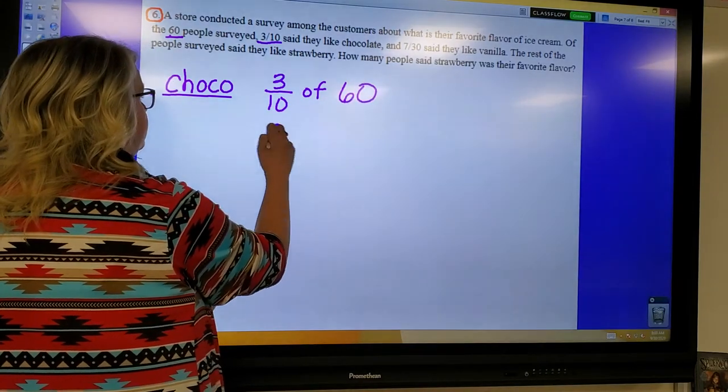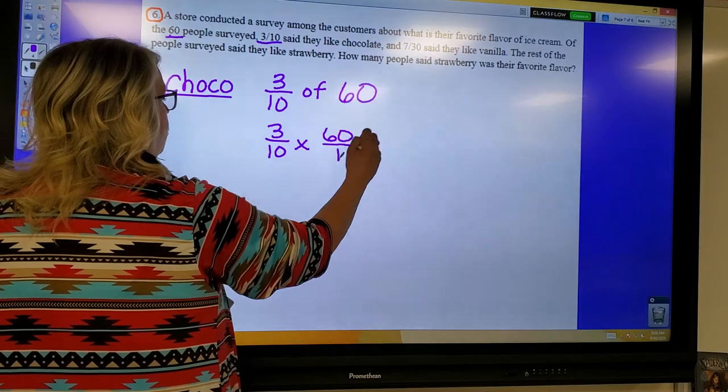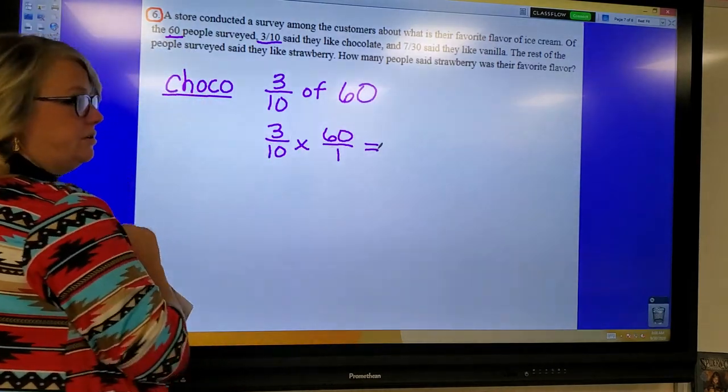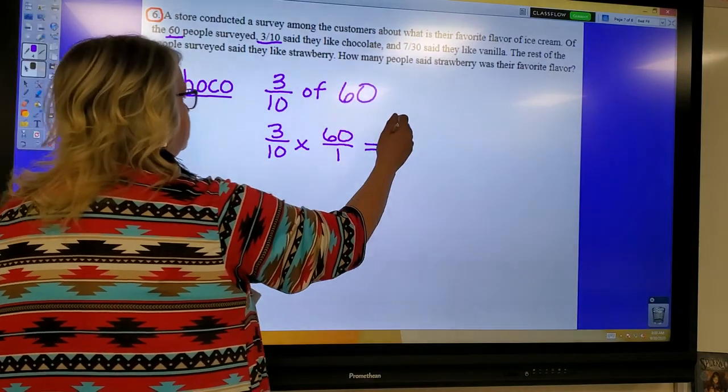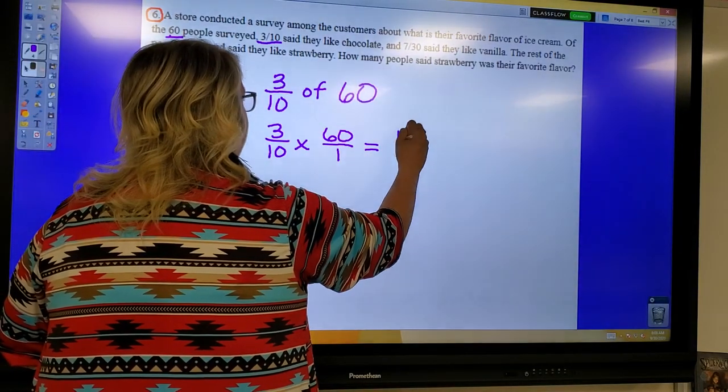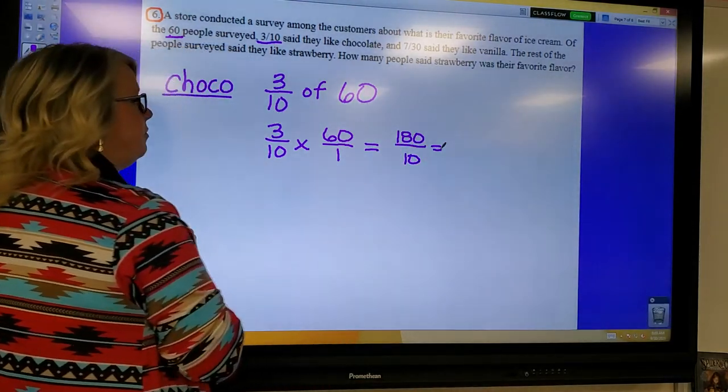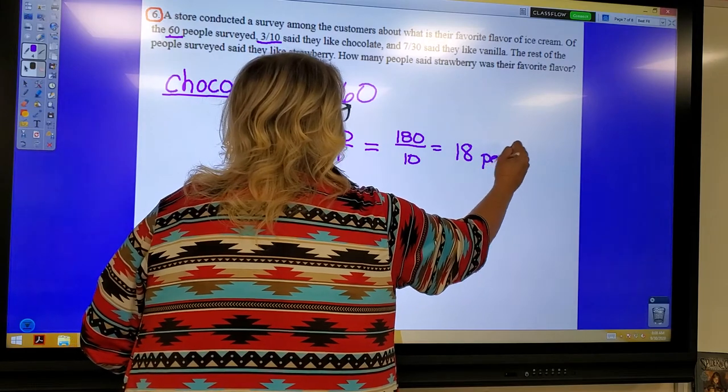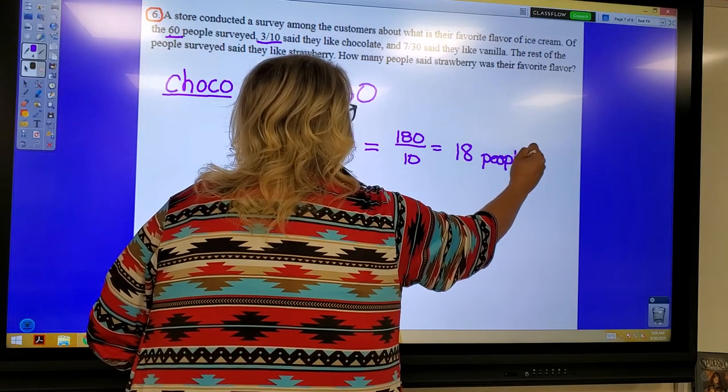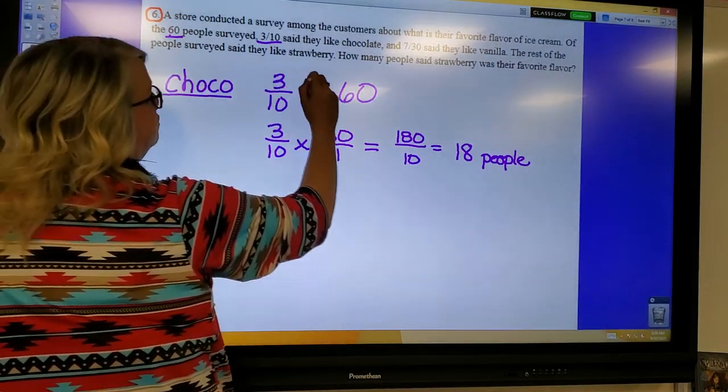So that would be three tenths times 60 over one. You can cross-reduce on this one, by the way. Most of you don't like doing that. I'm just going to multiply straight across. Three times 60 is 180. Ten times one is ten. That's improper. Ten goes into 180 18 times. So, 18 people like chocolate. Let's move on to vanilla. Seven over 30 like vanilla. Seven over 30 of those 60 people. So, seven over 30 times 60 over one. Seven times 60 is 420. 30 times one is 30. And 30 goes into 420 14 times.